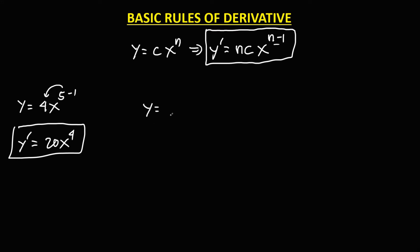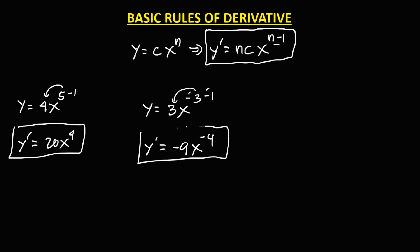For another example, to find the derivative: negative 3 times 3 gives negative 9, then x with the exponent reduced by 1 — so negative 3 minus 1 — the exponent is negative 4.